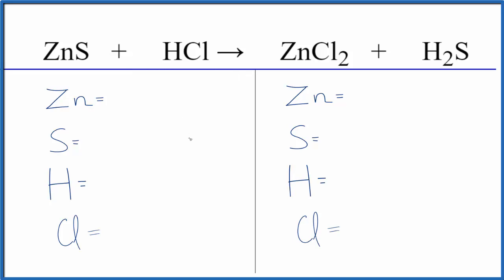So let's count the atoms up first. We have one zinc and then one sulfur, one hydrogen, and one chlorine.